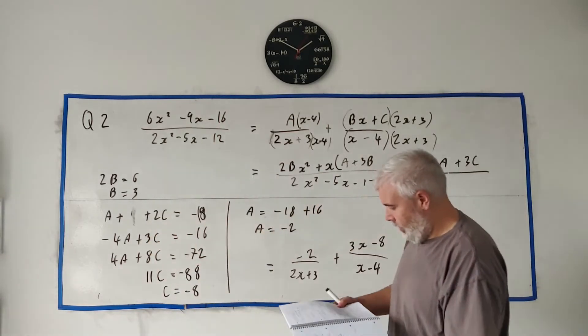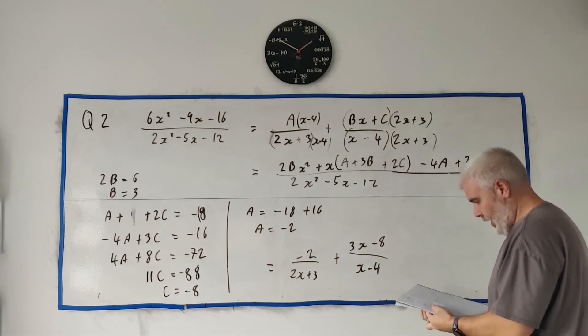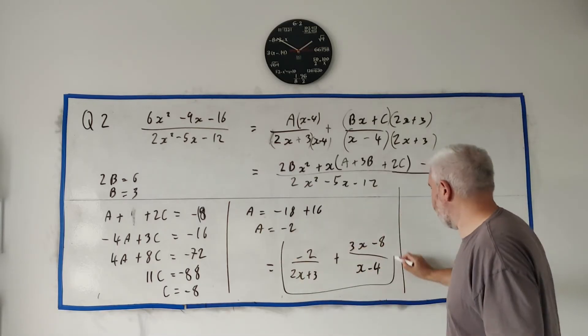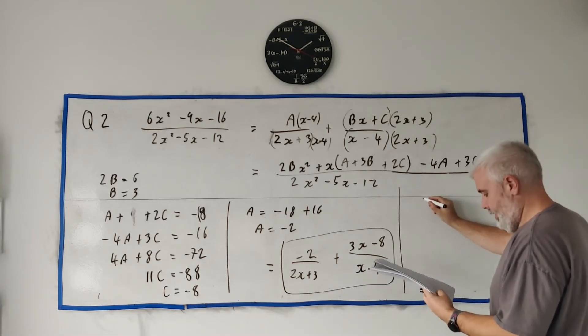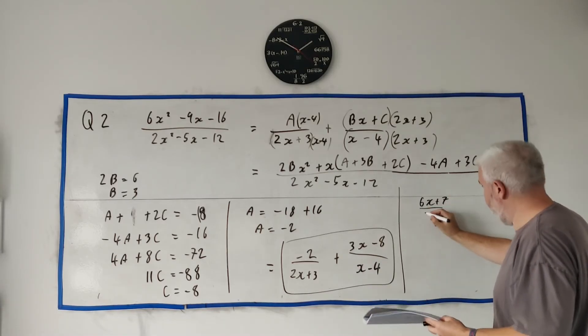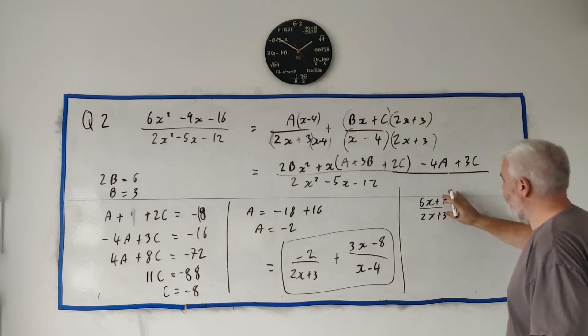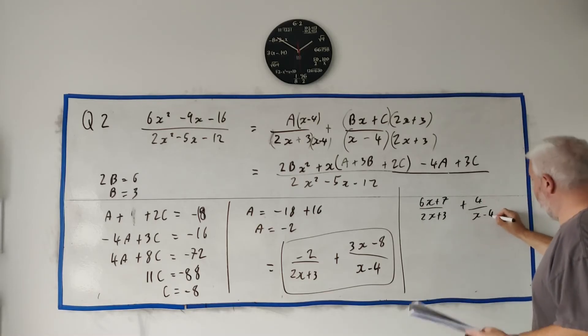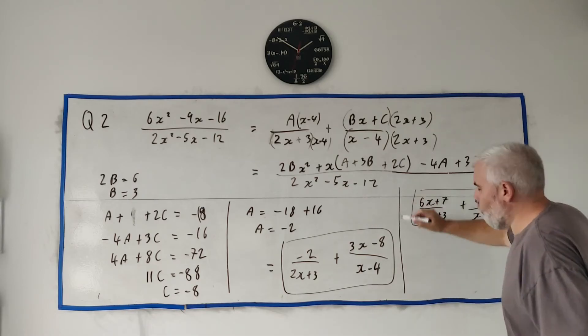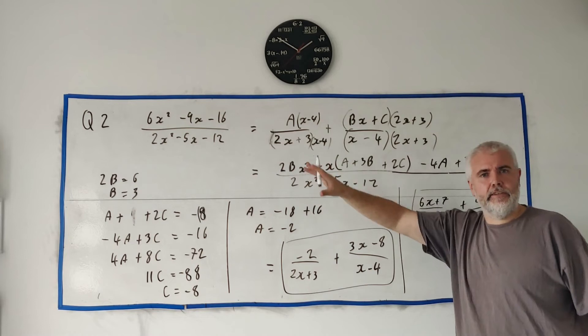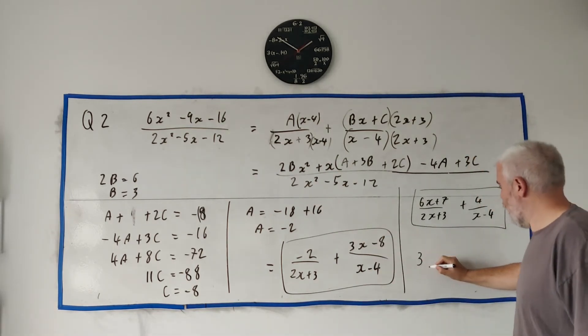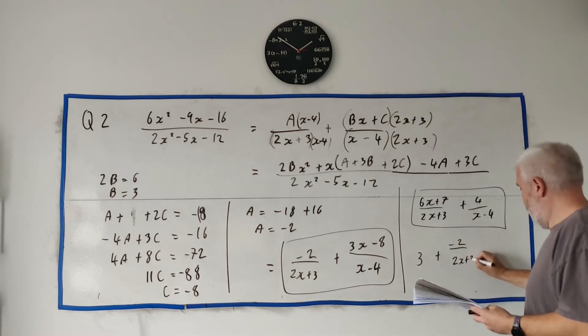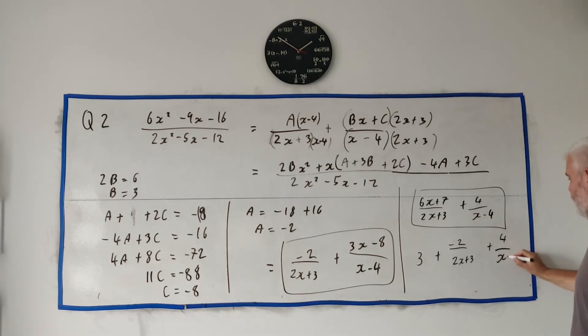And I'll write out all the different answers we would get here. Let's see, which one did I get? This one. Okay, we'd also get, so first of all, we'd get this answer. Another answer we would get is 6X plus 7, like very different, over 2X plus 3. That's if I put the X part on the left, plus 4 over X minus 4. That's another answer we'd get.